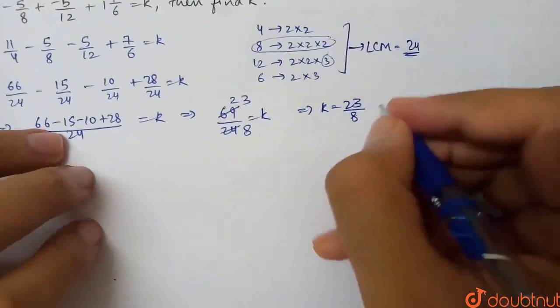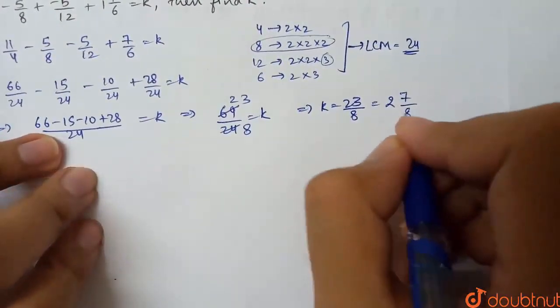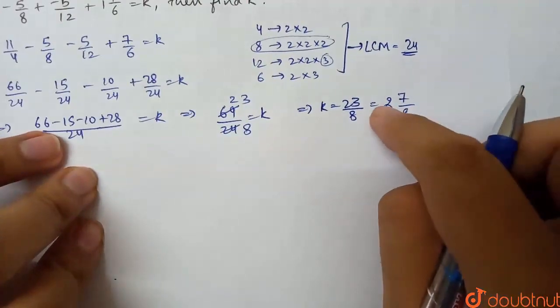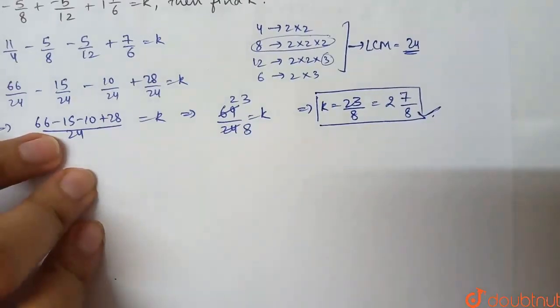Or, converting to a mixed fraction: 23/8 equals 2 7/8, since 8 times 2 plus 7 equals 23. These are the possible forms of the answer.